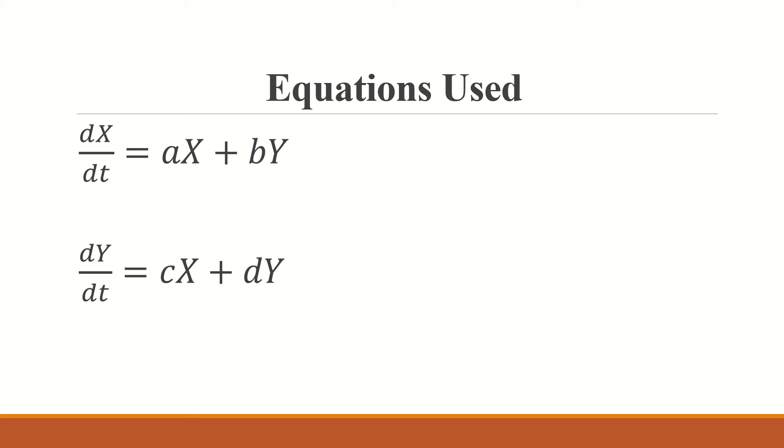The parameter A is the representation of how the male is encouraged by his own feelings while B is how his feelings are affected by the female's. The next parameters C and D are similar but they are the representation of the female's feelings. Given the parameters, the trend of the relationship can be found based on these differential equations.